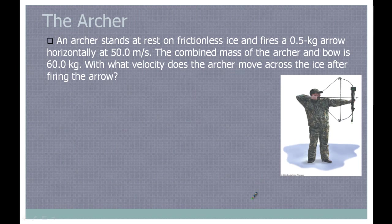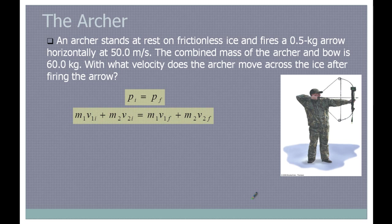Here's a quick problem. There's an archer standing on a frictionless frozen pond. He's going to fire a half-kilogram arrow horizontally at 50 meters per second. The total mass of the archer and bow without the arrow is 60 kilograms. With what velocity does the archer move across the ice after firing the arrow? We have to remember that the initial momentum equals the final momentum.